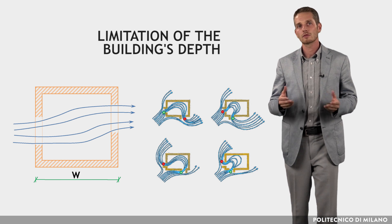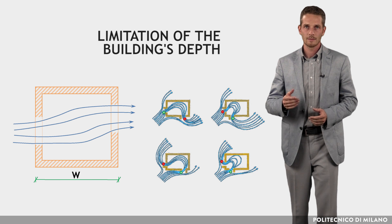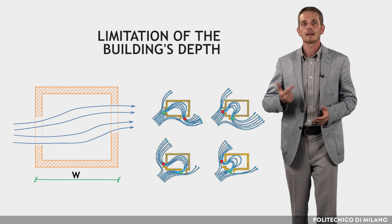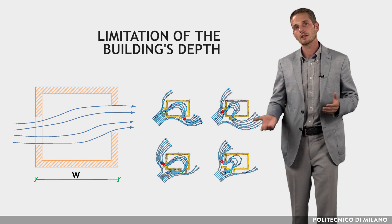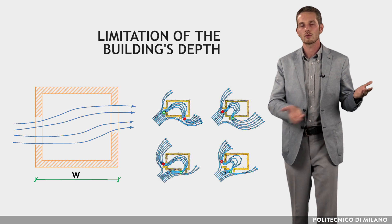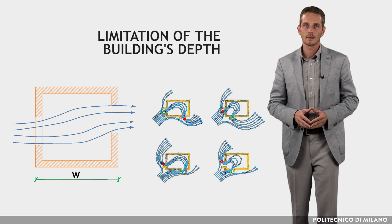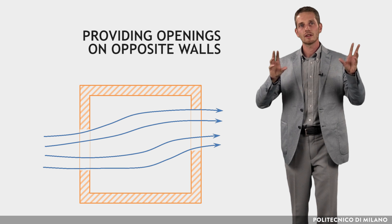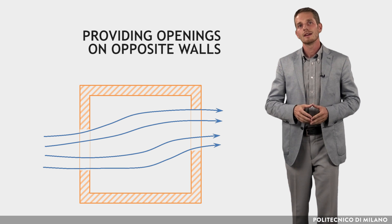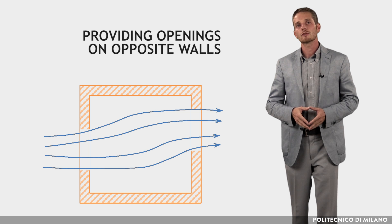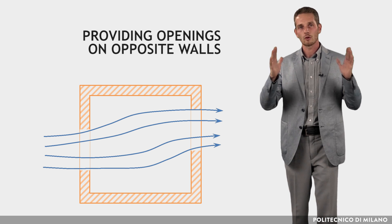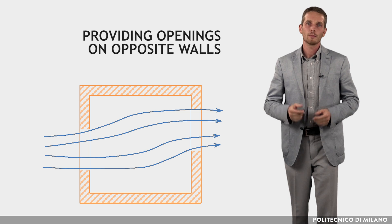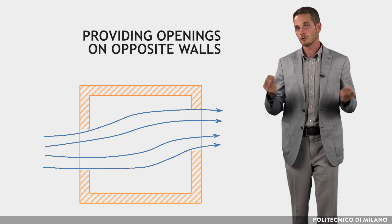Architectural elements can be used to harness prevailing winds. Architectural features like wind walls and parapets can be used to create positive and negative pressure areas to induce cross ventilation. Since airspeed inside a space varies significantly depending on the location of openings, the most effective strategy is to provide staggered openings on opposite walls. Room width should be limited if openings cannot be provided in two walls.